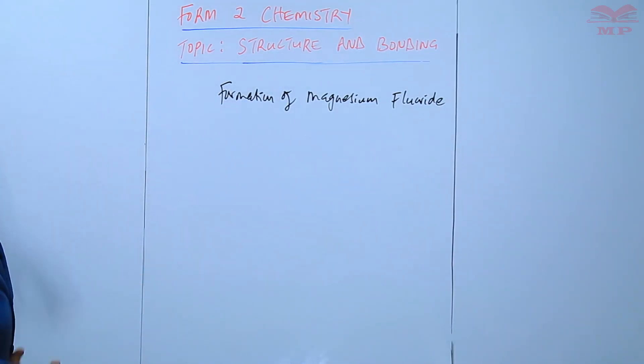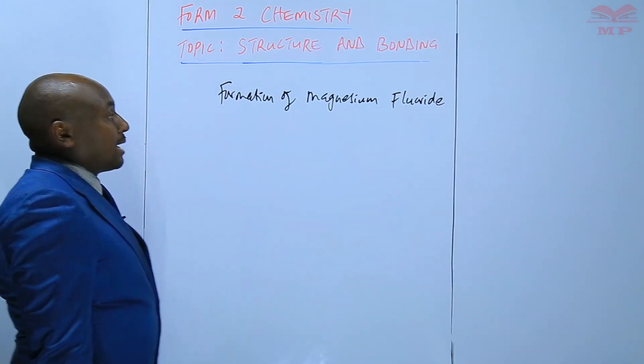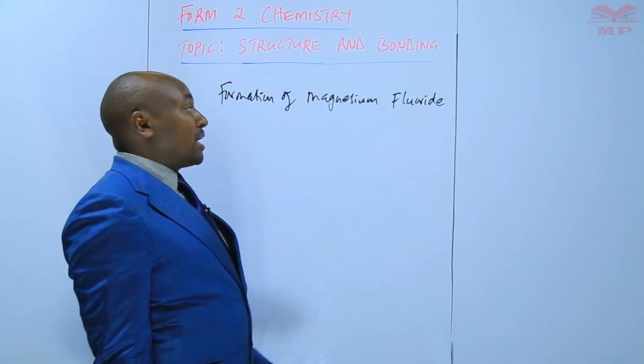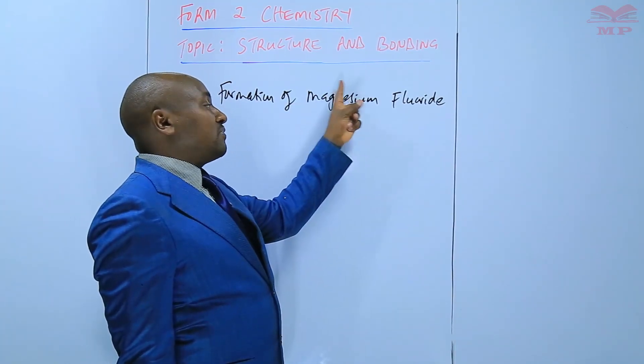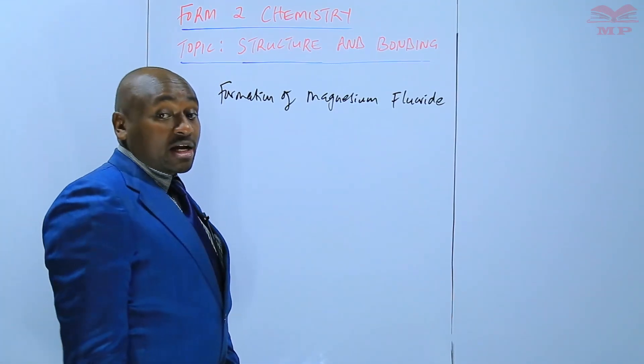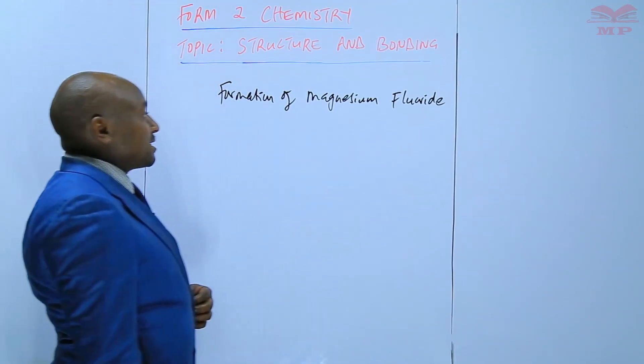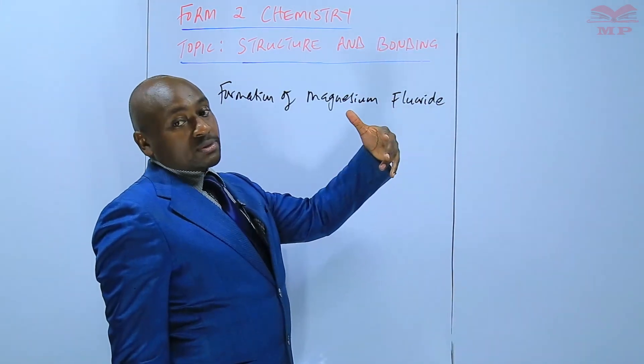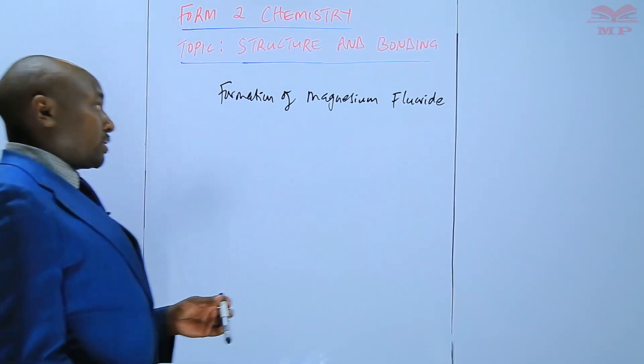Magnesium fluoride is an ionic compound because magnesium is a metal and forms a positively charged ion. Fluorine is a non-metal and forms a negatively charged ion. The attraction between the positive and the negative ion creates an ionic compound which is magnesium fluoride. Magnesium loses electrons while fluorine gains electrons and that's what leads to the formation of the ionic bond.